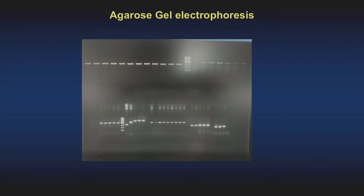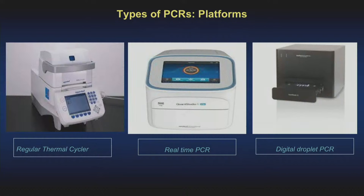Subsequently we have done away with agarose gel electrophoresis by adding some kind of fluorescence to the product itself. The real-time PCR and the digital droplet PCR are advancements to the standalone PCR where you need not do gel electrophoresis. You add fluorescence to the PCR product itself and while the product is being amplified, you visualize it.